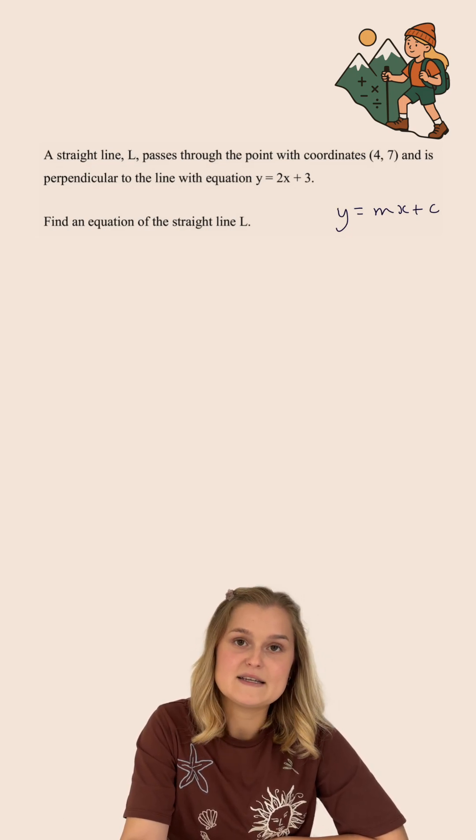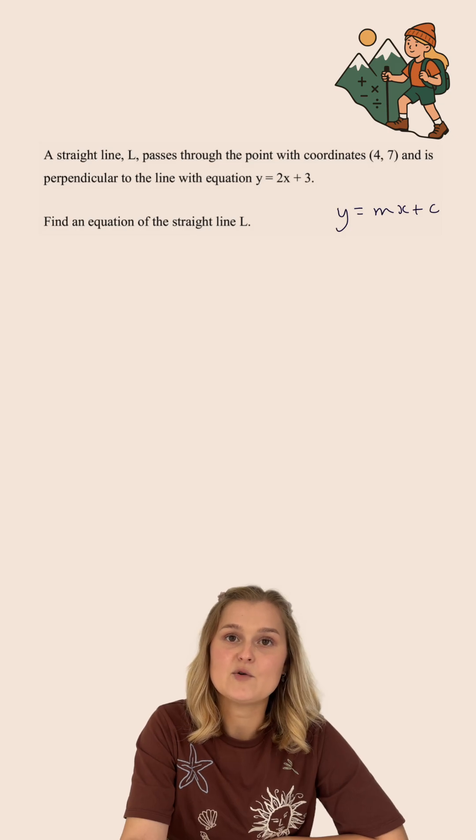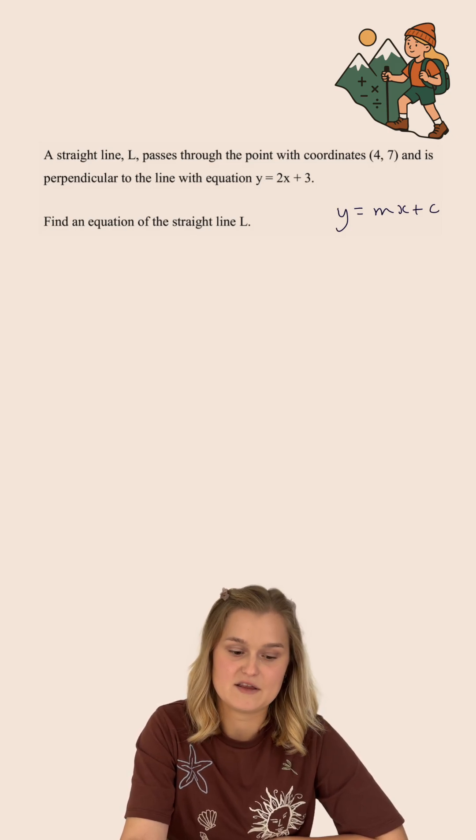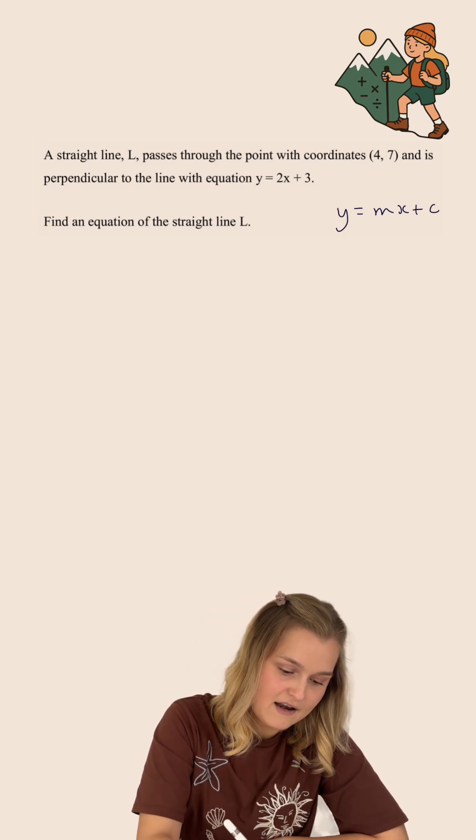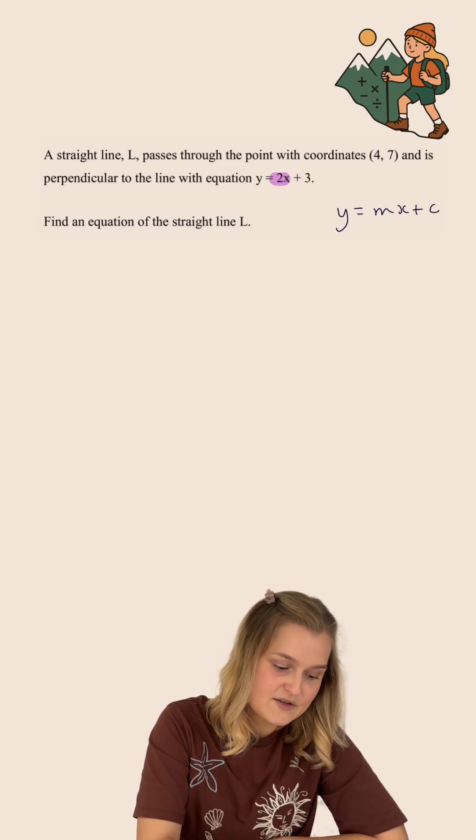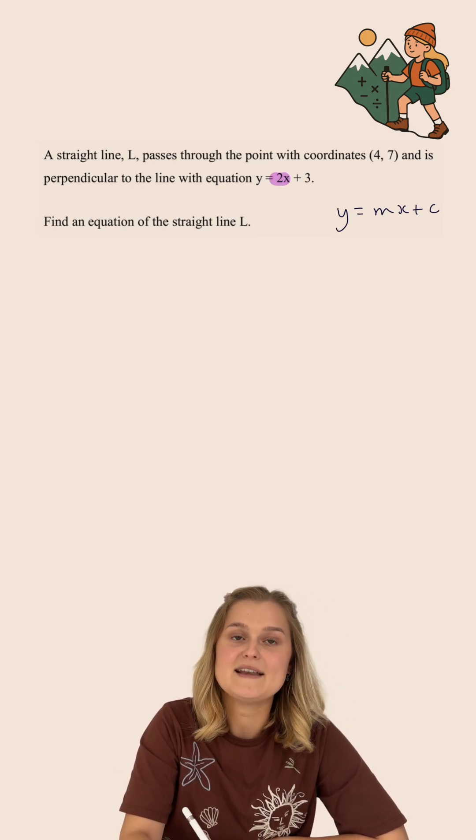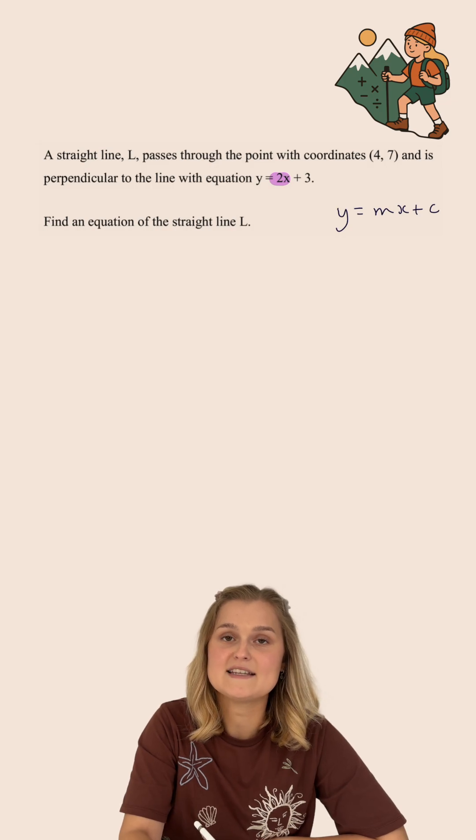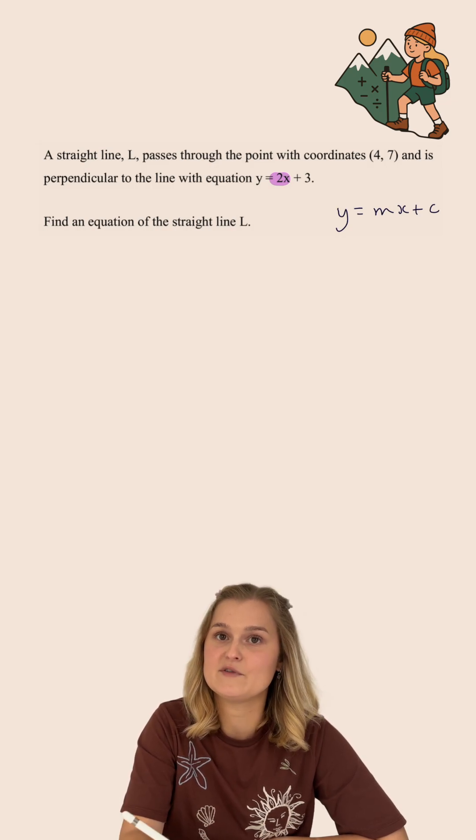Now if I have perpendicular lines, the gradients are always the negative reciprocals of each other. Now the gradient of my line that I've been given here is 2 and so the gradient of my new line is going to be negative 1 half because negative 1 half is the negative reciprocal of 2.